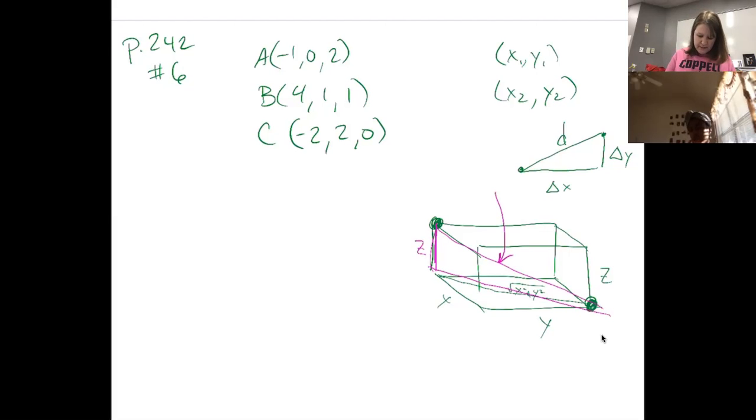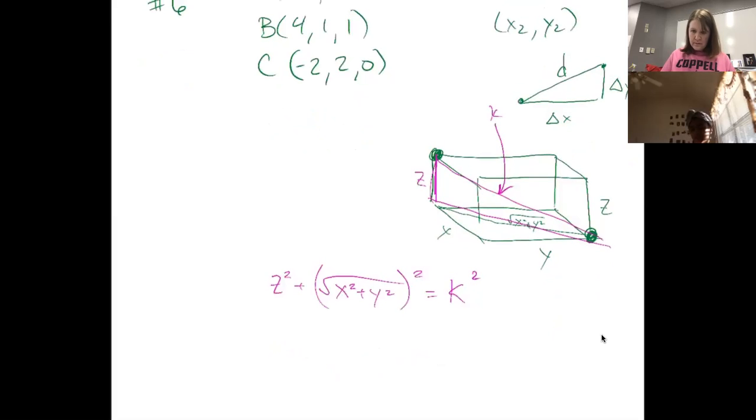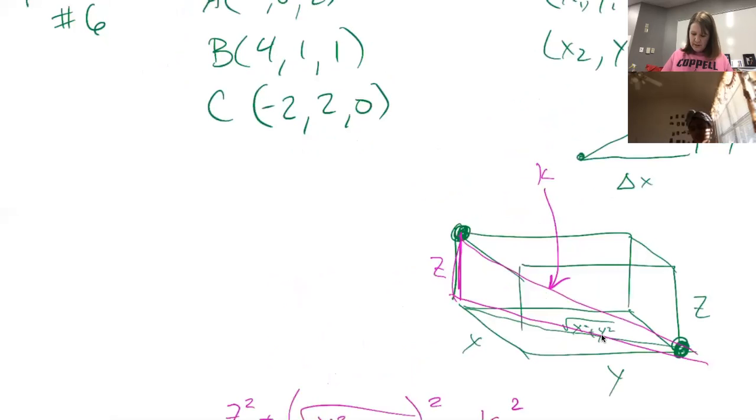If I take z squared plus the square root of x squared plus y squared and I square that and that's equal to k squared, so it'd be x squared plus y squared plus z squared, and that's the square root of all of that. That would equal the square root of x squared plus y squared plus z squared. Can you see it on that box?